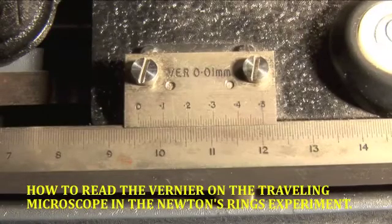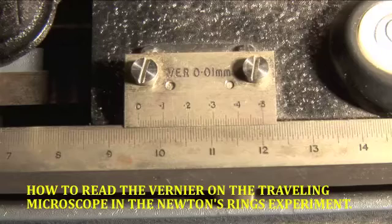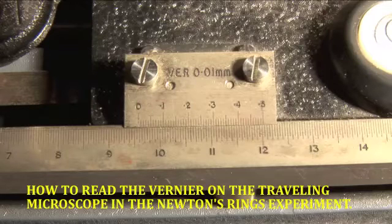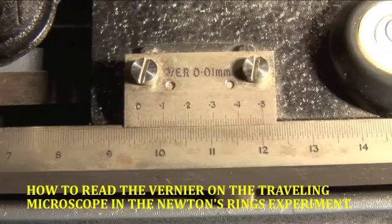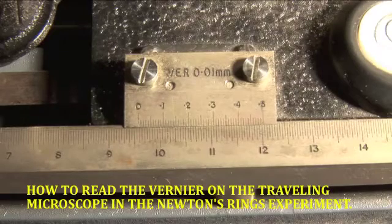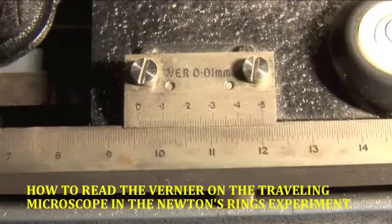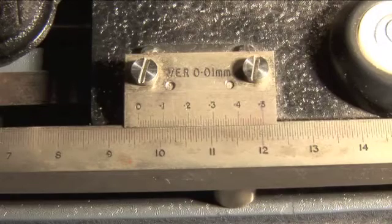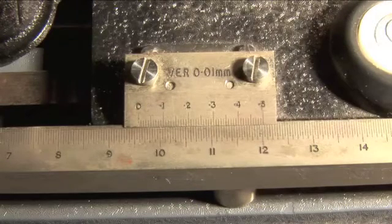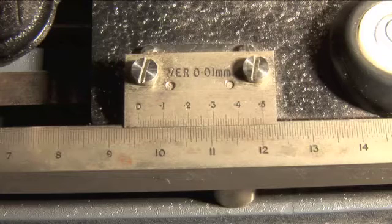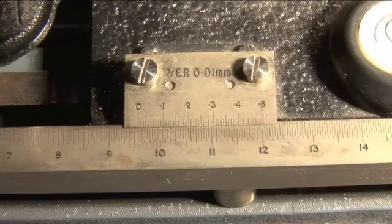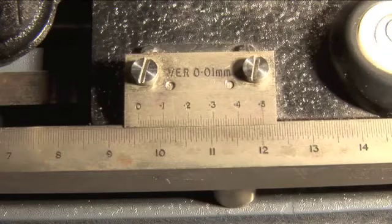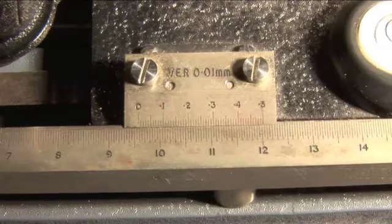This video explains how to read the vernier scale on the traveling microscope in Newton's rings experiment. Suppose you've lined up the crosshairs right in the middle of a dark ring. The dark bit has a certain thickness and you've managed to get the crosshairs right in the middle of that dark bit, and you want to find the position of the crosshairs.